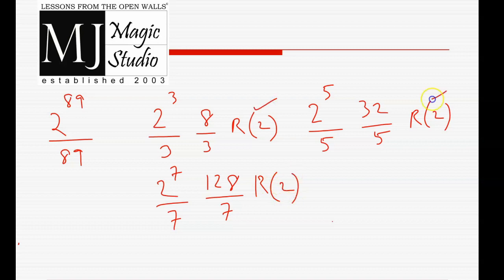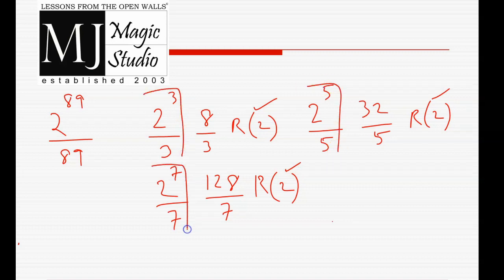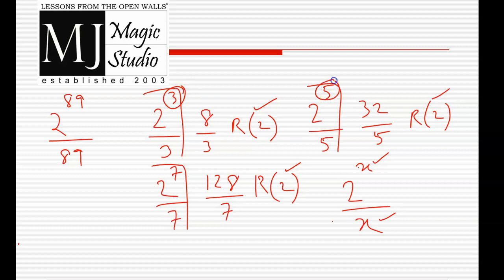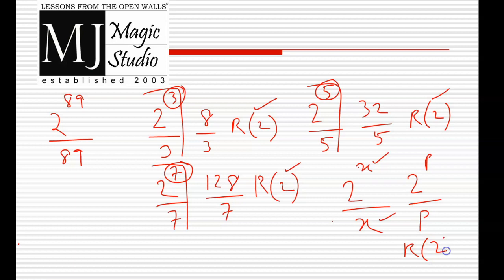So every time we see the remainder is 2. Now, what is the same frame used in all 3 examples? Look carefully — 2 to the power x is divided by x. What is peculiar about this x? If you look clearly, x is nothing but a prime number. So when 2 to the power p is divided by p, remainder is 2.